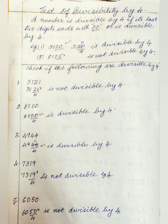Next we are going to see the Test of Divisibility by 4. A number is divisible by 4 if its last two digits end with 00, or if the last two digits are divisible by 4. For example, 3120: the last two digits are 20, and 20 is divisible by 4, so 3120 is divisible by 4. 8105: the last two digits are 05, and 4 does not go into 5, so 8105 is not divisible by 4.